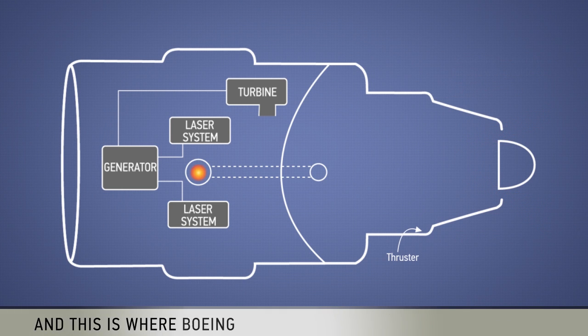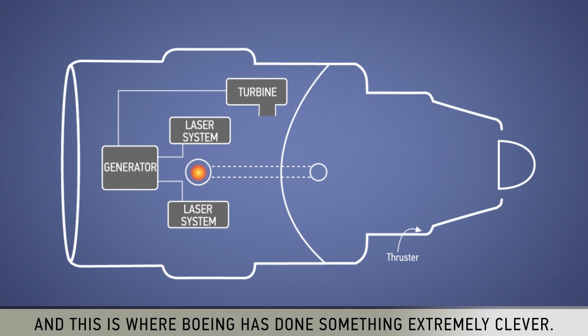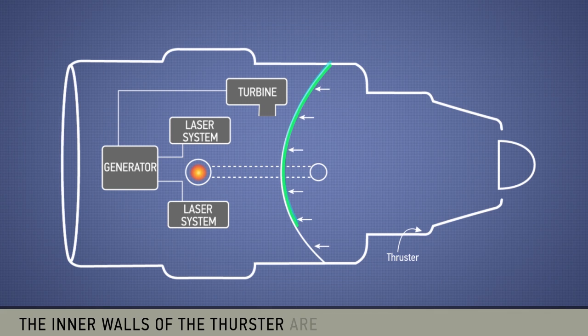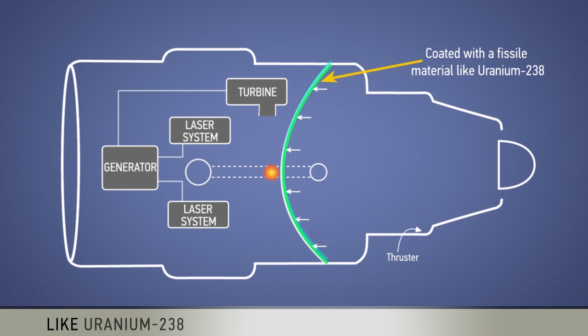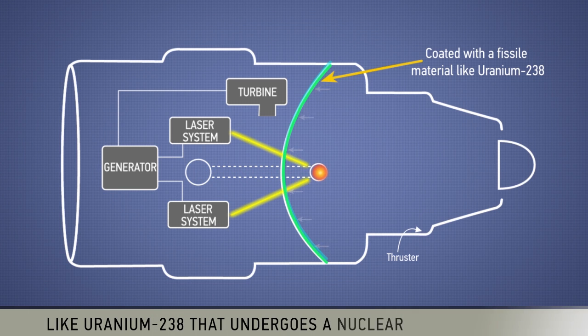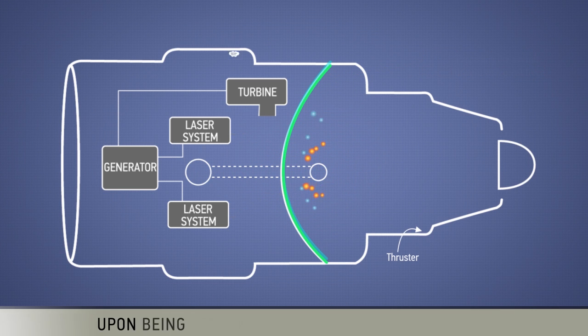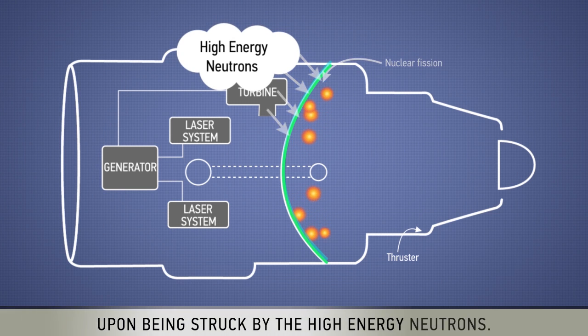And this is where Boeing has done something extremely clever. The inner walls of the thruster are coated with a fissile material like uranium-238 that undergoes a nuclear fission reaction upon being struck by high energy neutrons.